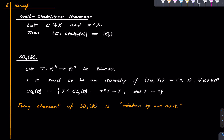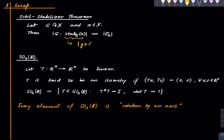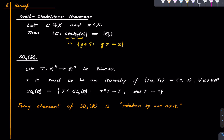Let us recall the orbit-stabilizer theorem. Suppose we have an action of a group G on a set X, and x is an arbitrary element in X. Then the index of the stabilizer of x is the same as the cardinality of the orbit of x. The stabilizer of x consists of those group elements which stabilize x, and it is a subgroup of G. In the finite case, the cardinality of G equals the cardinality of the orbit of x times the cardinality of the stabilizer of x.